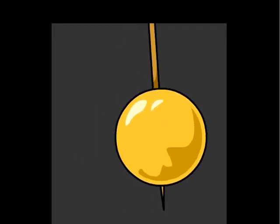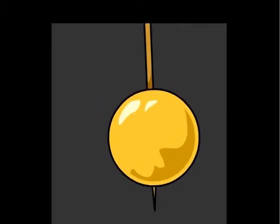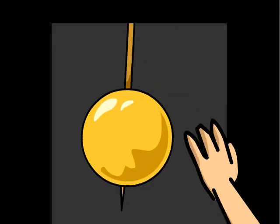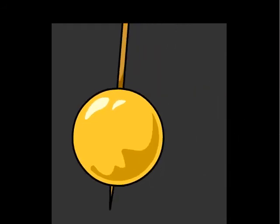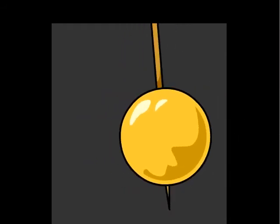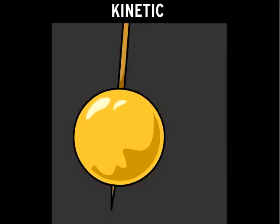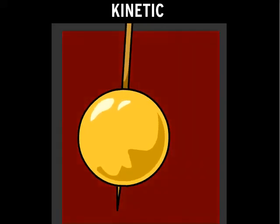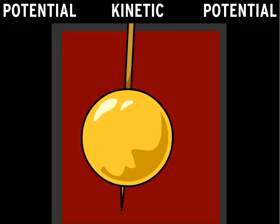The pendulum in a clock is a good way to see how kinetic and potential energy work. I'm raising the pendulum above its normal position — that gives it potential energy. When I let go, that potential energy is released and transformed into kinetic energy. As it swings up again, that kinetic energy becomes potential energy.